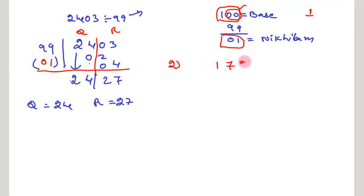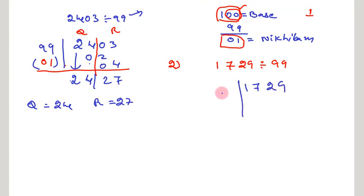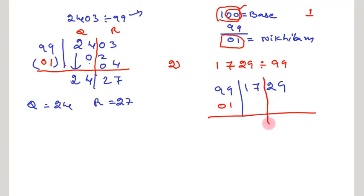The second problem is 1,729 divided by 99. Firstly, let us adjust these numbers in this manner. Then we have to write down the Nikhilam of 99, that is 0, 1. Then we divide our dividend into 2 parts by taking a straight line after the 10s place. Bring down the leftmost digit, that is 1. And take the product of 1 and Nikhilam, that is 0, 1 again.